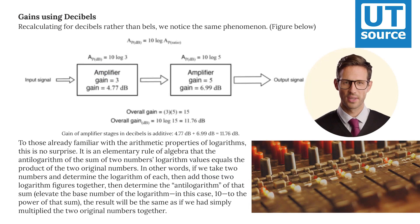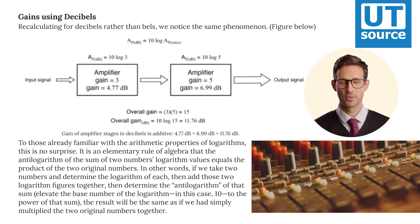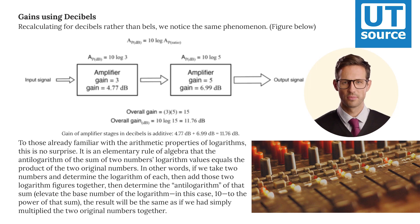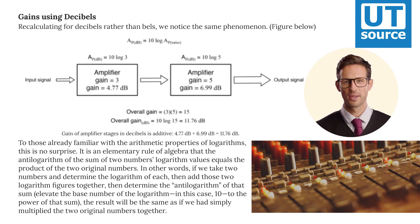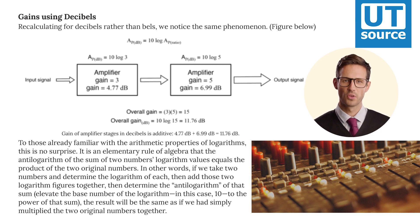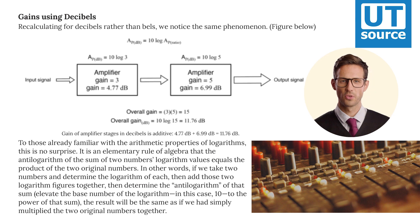Recalculating for decibels rather than bells, we notice the same phenomenon. To those already familiar with the arithmetic properties of logarithms, this is no surprise. It is an elementary rule of algebra that the antilogarithm of the sum of two numbers' logarithm values equals the product of the two original numbers.